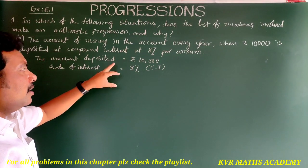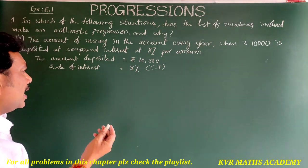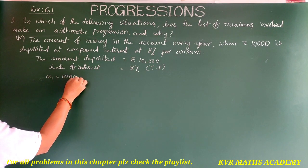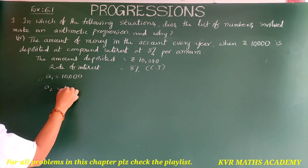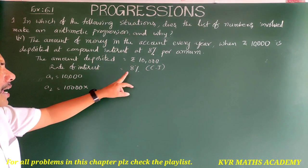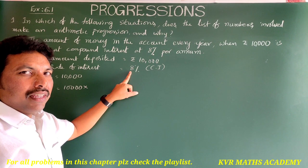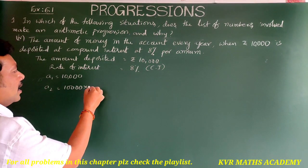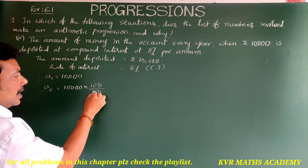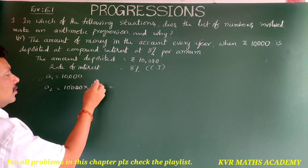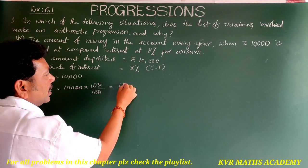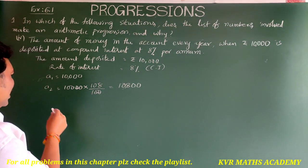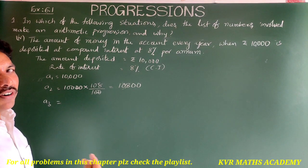So a₁ = 10,000. For a₂, after 1 year: 10,000 × (108/100) = 10,800. For a₃, after 2 years: 10,000 × (108/100)² = 10,000 × 108 × 108 / 10,000 = 11,664.